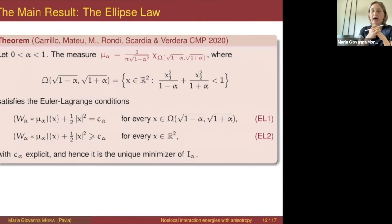The situation is completely symmetric for alpha negative: for alpha between −1 and 0, we get a uniform distribution on a horizontally elongated ellipse, and at alpha equal to −1 we get the semi-circle law on the horizontal axis.